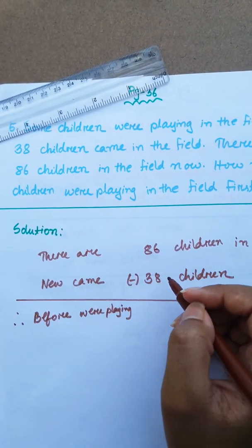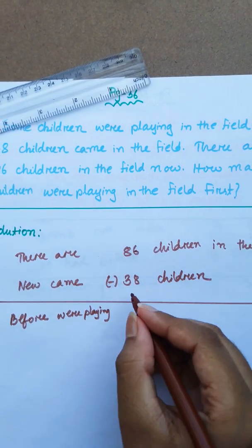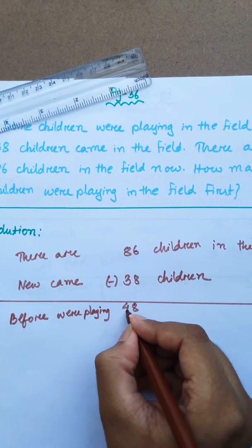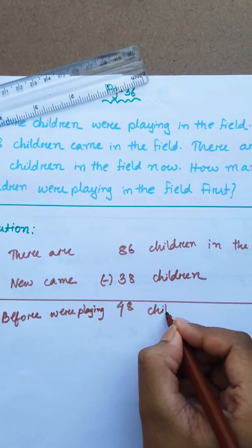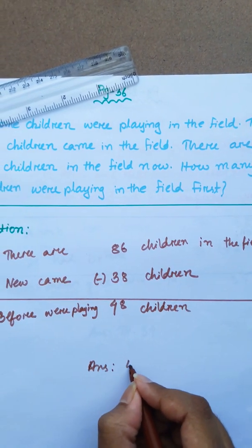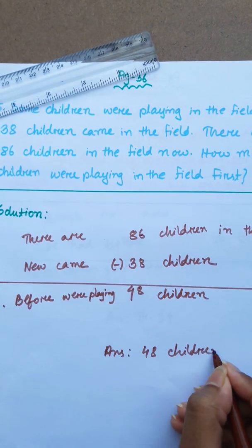Therefore, before were playing 48 children. So answer: 48 children.